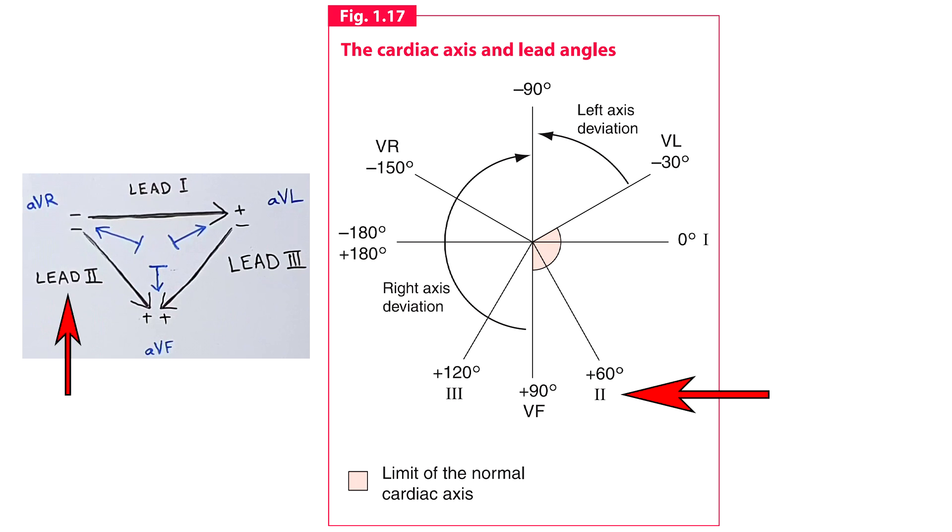Lead 2 from plus 60 degrees, lead VF from plus 90 degrees and lead 3 from plus 120 degrees. Leads VL and VR look from minus 30 degrees and minus 150 degrees respectively.